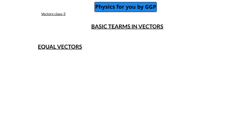Welcome all to Vectors Class 3. In this class we will discuss the basic terms that we are using in vectors. The first term is equal vectors. Equal vectors means two vectors are equal if they are having the same magnitude and direction.